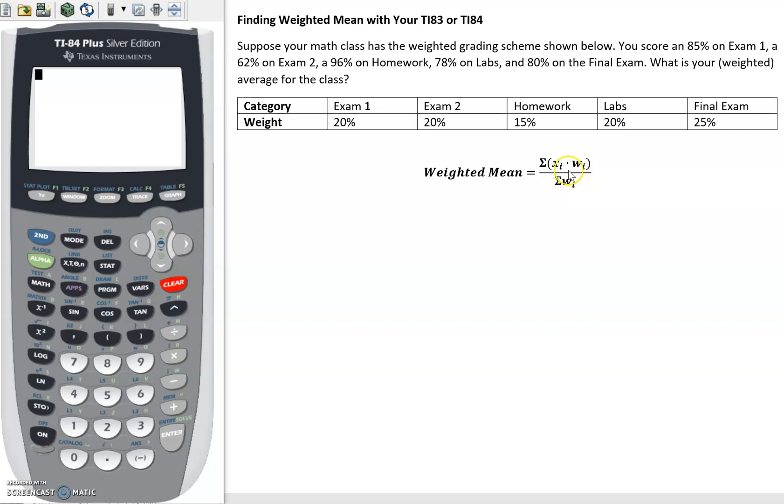So we would add up a bunch of things that look like xi times wi. Okay, xi, those are just observations. So those are the different scores you get in each category, like the 85% in exam 1. wi, that's the weight for that category.